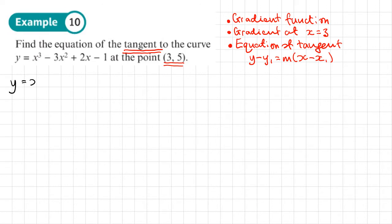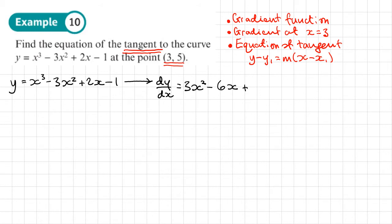So we have y equals x cubed minus 3x squared plus 2x minus 1, and we want the gradient function — the derivative. So dy/dx equals 3x squared minus 6x plus 2. That's the gradient function. We now want to find the gradient at x equals 3, since that's where the tangent is.